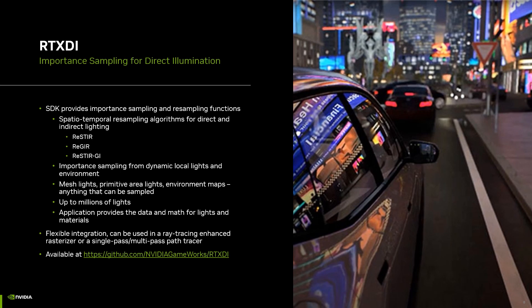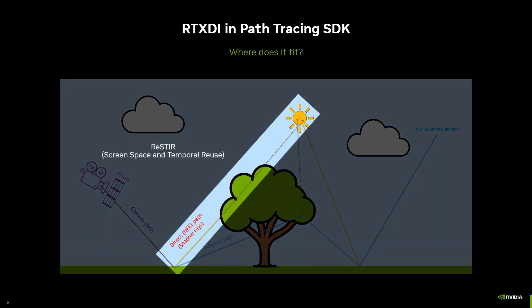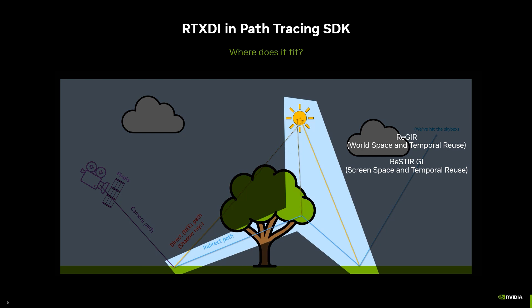First on the list is importance sampling. We have a library called RTXDI — RTX Direct Illumination — which provides importance sampling and resampling functions for different light types across direct and indirect paths. Resampling is the process of reusing samples that have been discovered to be good, happening in both spatial and temporal domains, supporting emissive meshes, analytical lights, and environment maps. In our proposed pipeline, we use three RTXDI components: ReSTIR for primary surfaces, ReGIR for world-space light sampling beyond the primary surface, and ReSTIR GI to enhance direct illumination by resampling indirect paths in screen space.